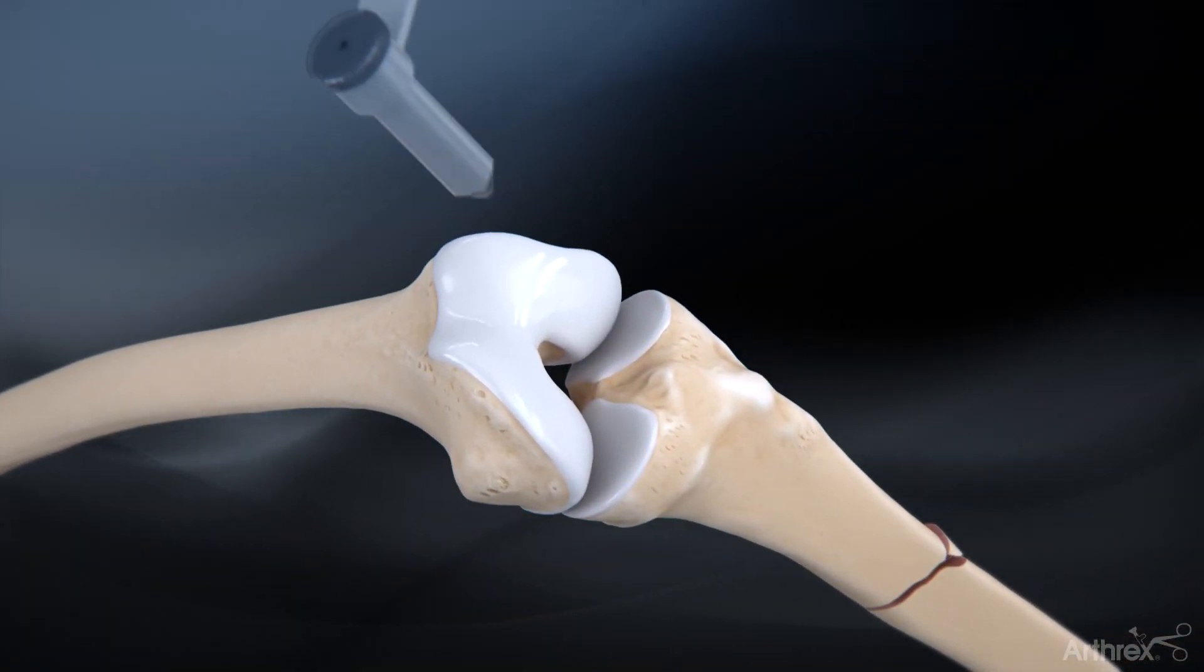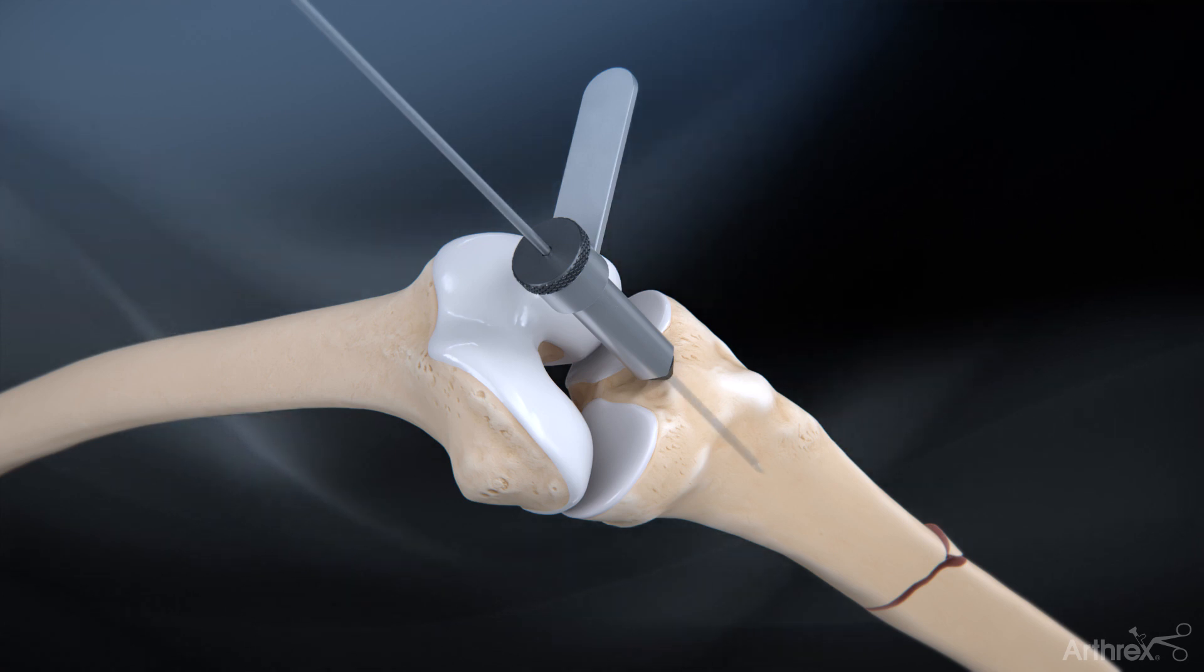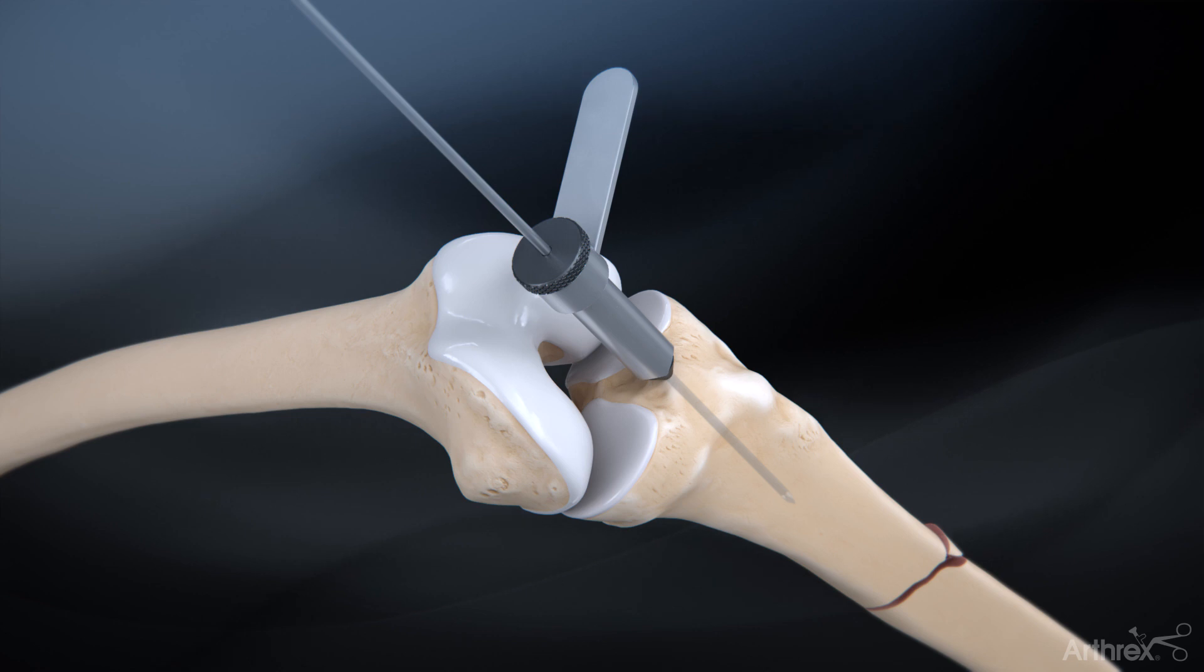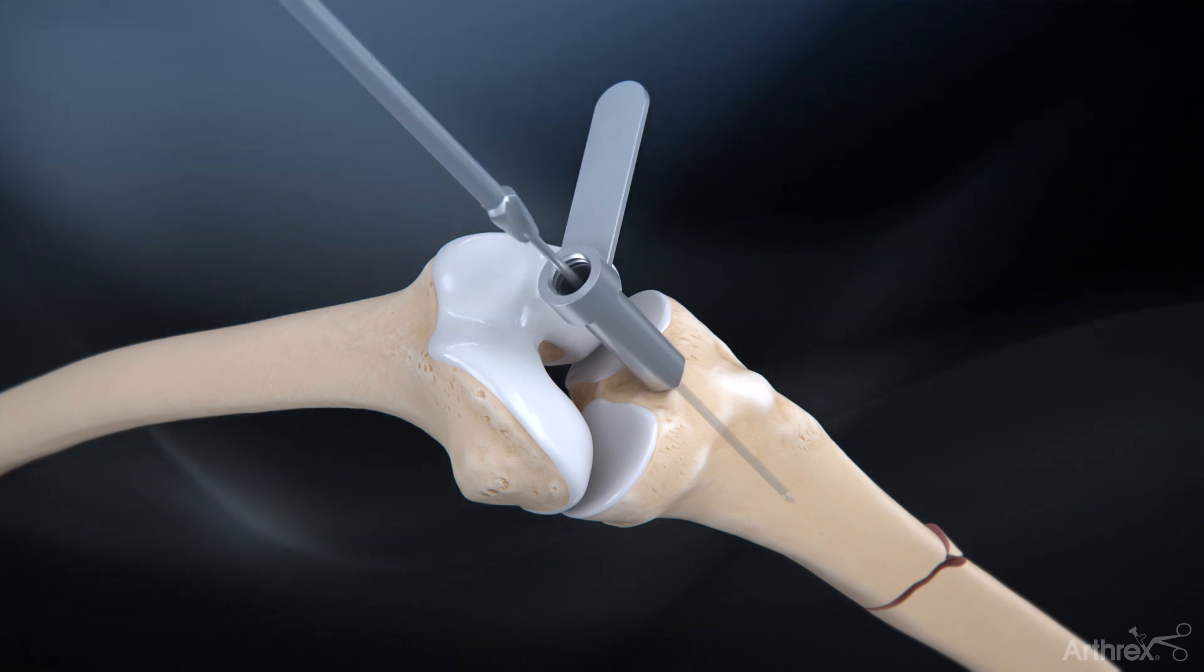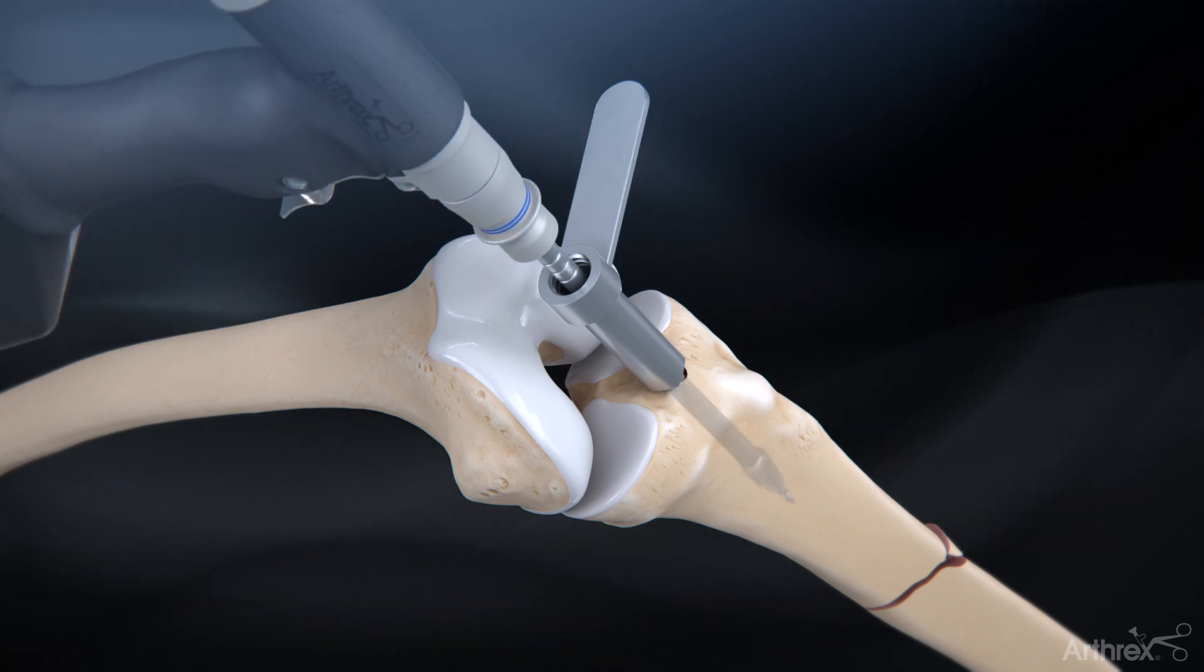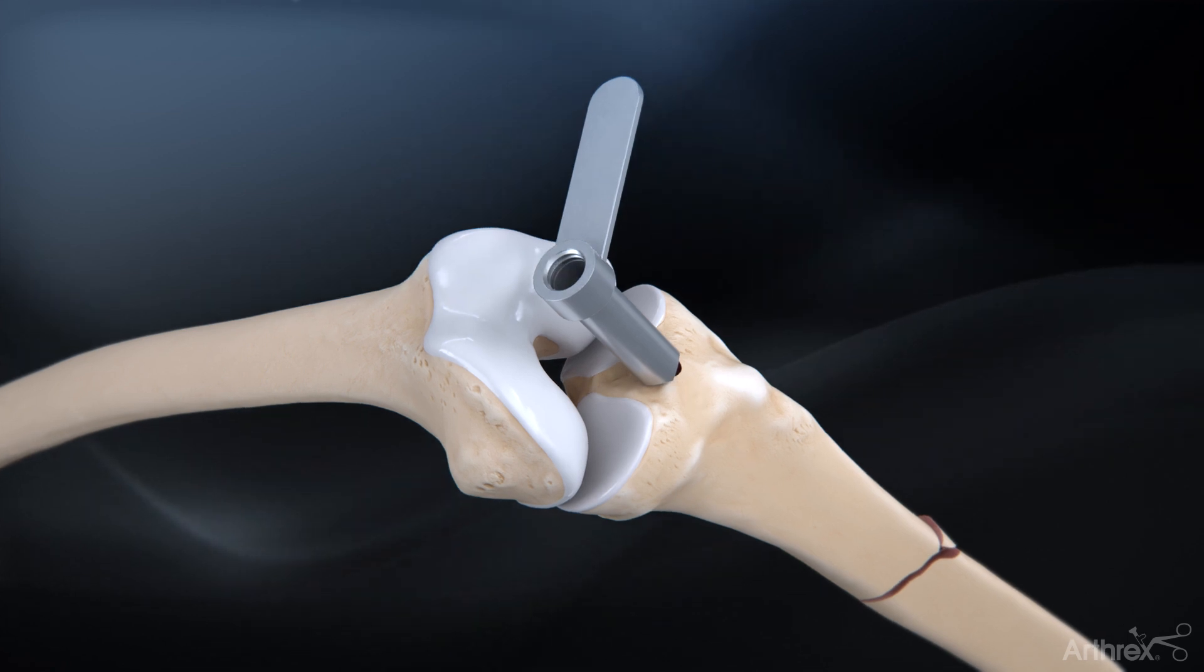Orient the entry tube and pin guide in the desired position. Insert the 3.2 mm guide pin into the proximal tibia so that it reaches the center of the intramedullary canal. Remove the inner pin sleeve and use the 12.0 mm reamer to open the canal. Remove the 3.2 mm guide pin.